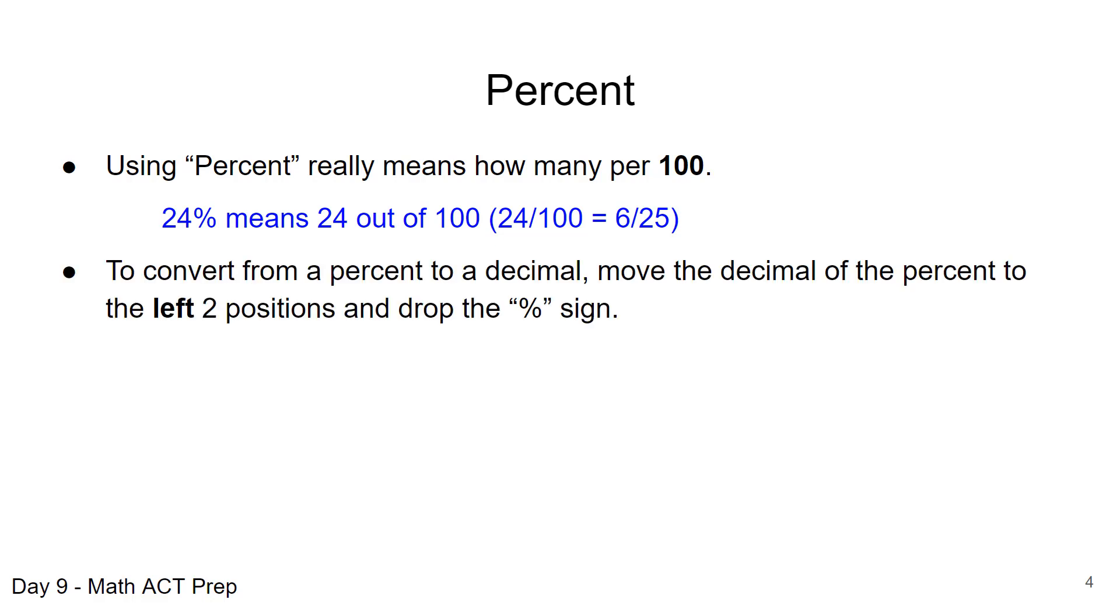A lot of times in order to be able to do calculations on your calculator or even to do them by hand when we're working with percents, we need to change the percent to a decimal version. So to do that if you're given a percent and we want to get a decimal, we're going to move two positions to the left and you drop the percent sign so it becomes a decimal.